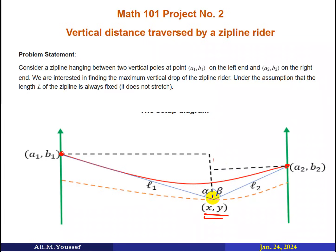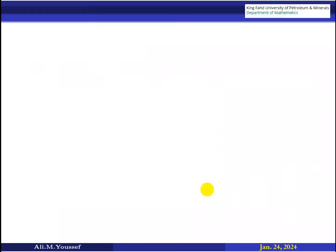We want to find point x,y. If you look at this point x,y, we can say that this point is a critical point of the function. Our idea is to get the equation of this line, take the derivative, and put y prime equal to zero. We set y prime equal to zero because our objective is to get this point x,y, which is a critical point of the function.